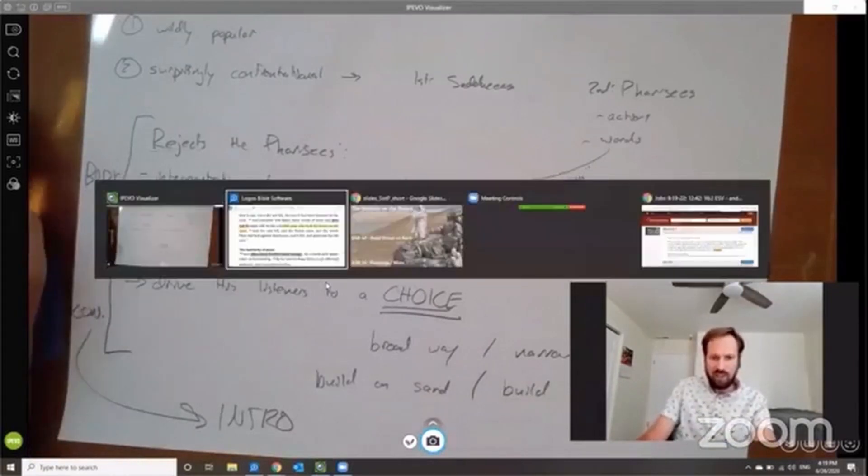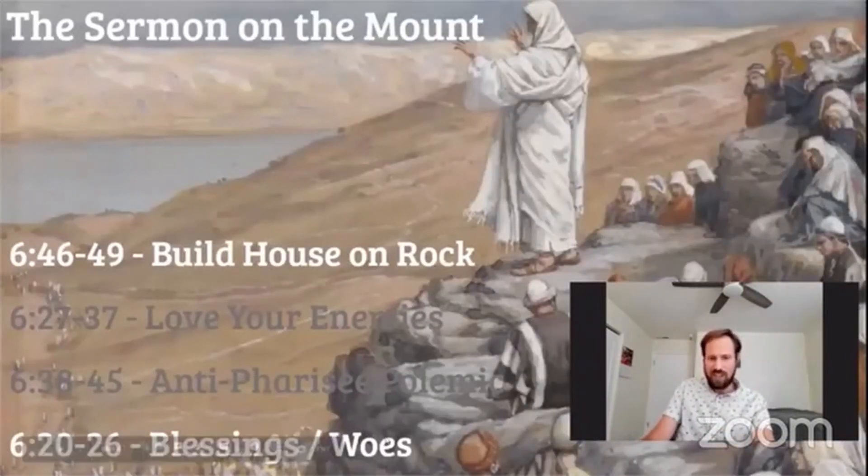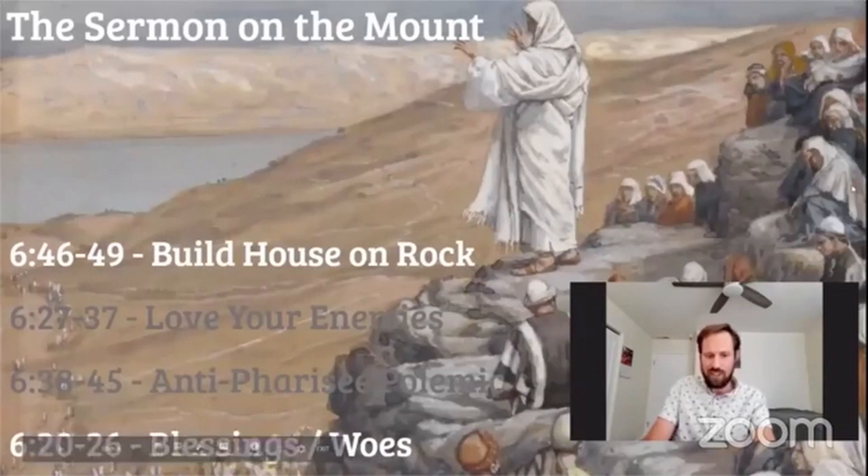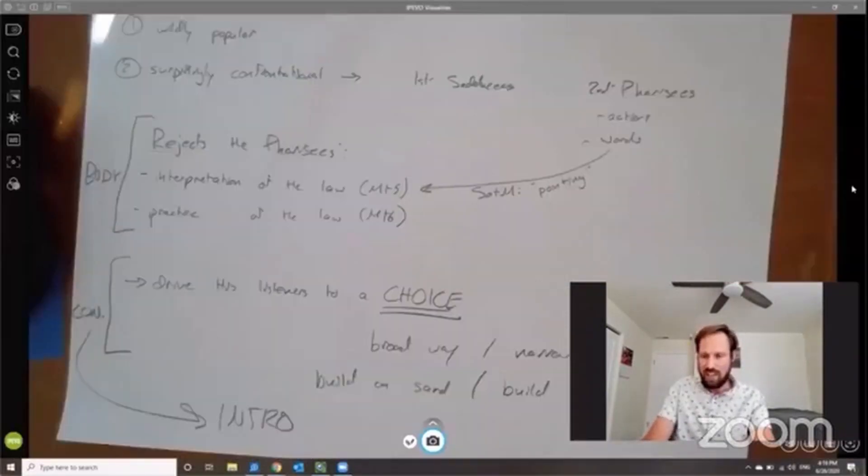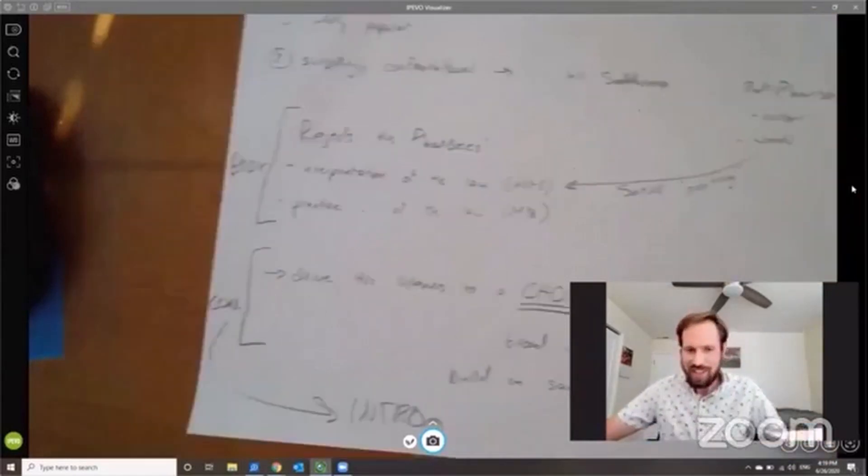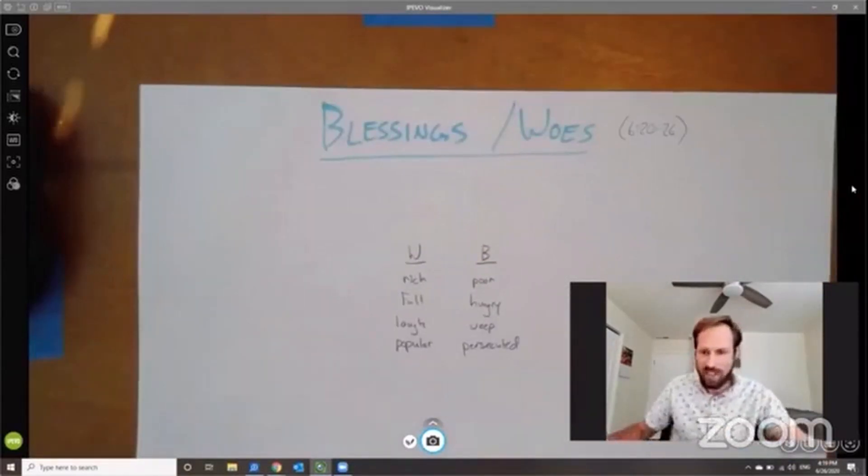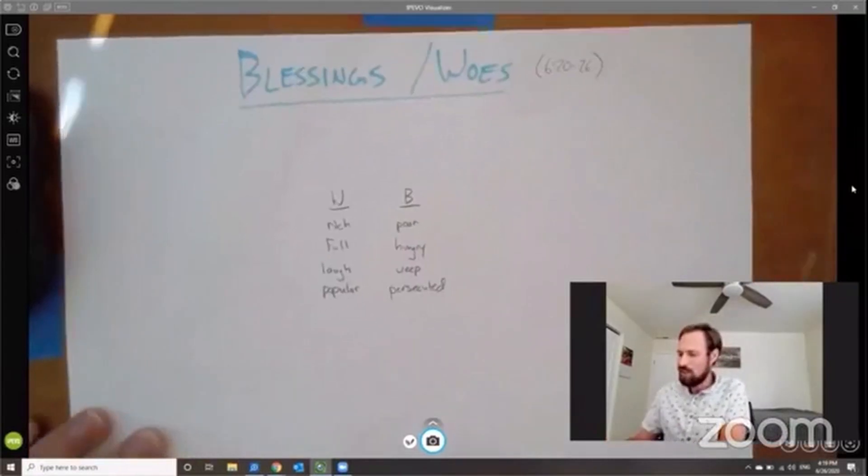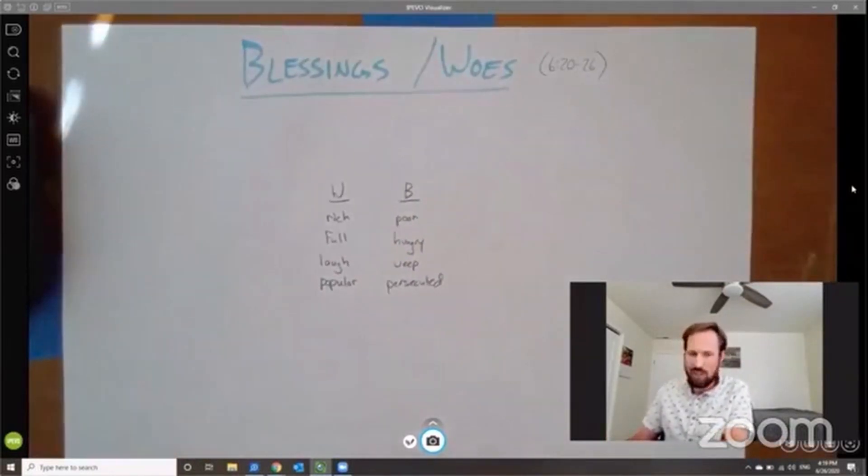I'm going to jump back to this. We looked at the conclusion. Now let's take a look at that introduction, the blessings and the woes. And I'm going to give you a new piece of paper. It's about time for that, don't you think? Blessings and the woes. This is how Jesus introduces his Sermon on the Mount.